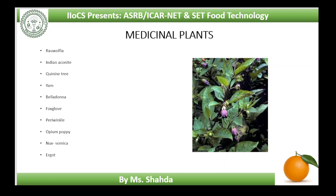Rauwolfia. The genus Rauwolfia was named after the 16th century German physician and explorer Dr. Leonard Rauwolf. The plant grows in tropical or subtropical regions. They are best raised from root cuttings; seeds and stem cuttings are also used for propagation. Indonesia was once a major source, but its once extensive supply of trees and shrubs have been exhausted. Presently, the leading producers are India and Thailand.